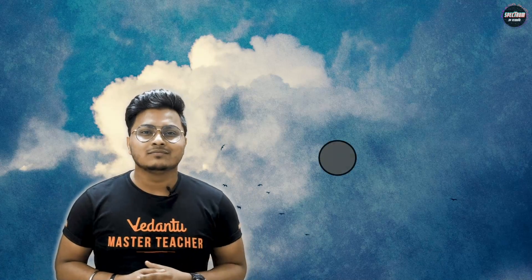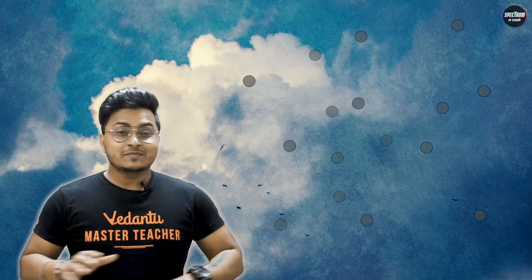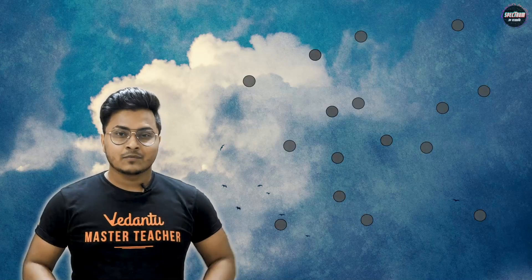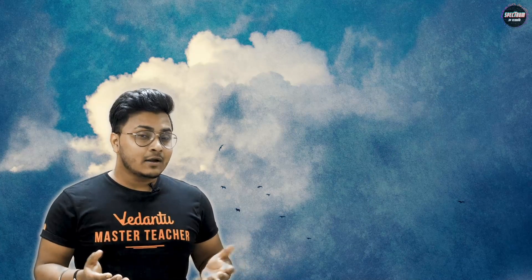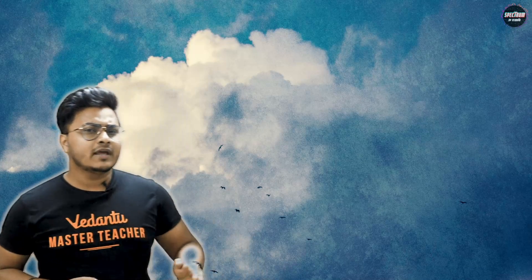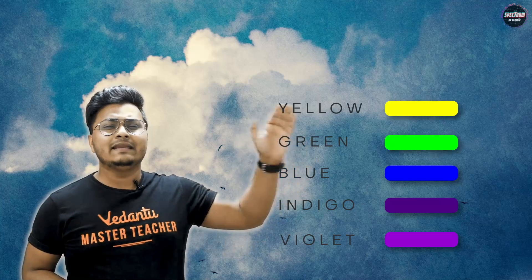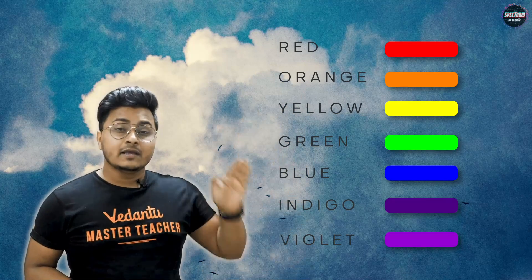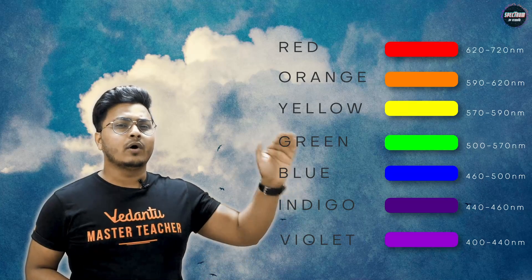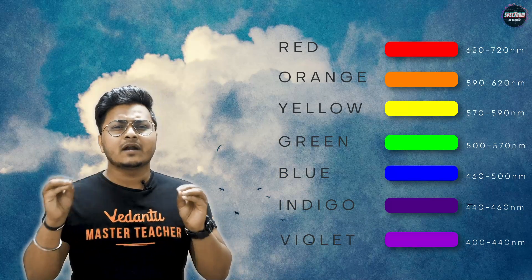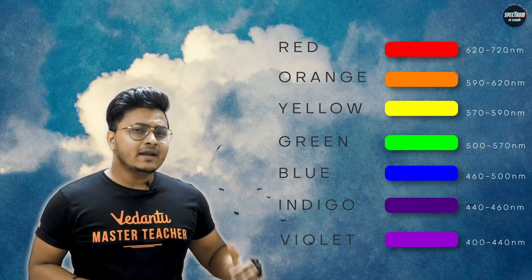The key point is: if the size of the particles in the atmosphere matches with the blue wavelength of light, then blue color scatters the most, and the rest of the colors come down below. The atmosphere has many different types of particles, and most of them are scattering this particular blue wavelength. The color spectrum from smallest to largest wavelength goes: violet, indigo, blue, green, yellow, orange, red.